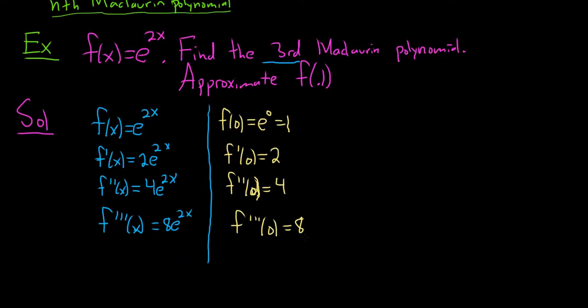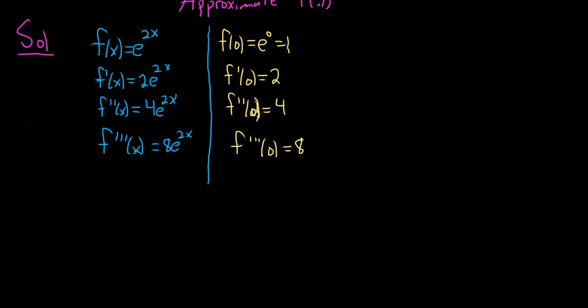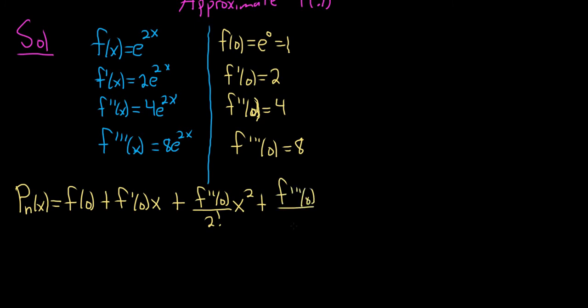So now that we have all of this, we can go ahead and write the formula down. So for the third Maclaurin poly, it'll just be f of 0, and then plus f prime of 0, and then it's x minus 0, so we just put x, plus f double prime of 0. This one gets divided by 2 factorial. Notice the factorial matches the derivative, then x squared, plus f triple prime of 0 over 3 factorial x cubed.